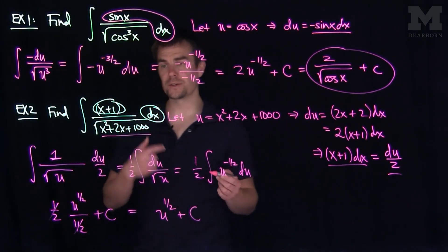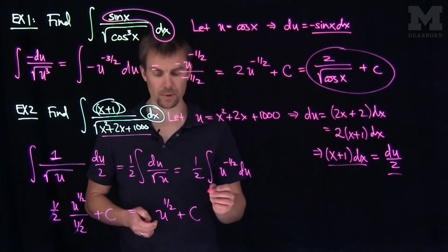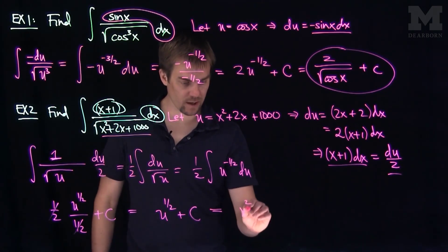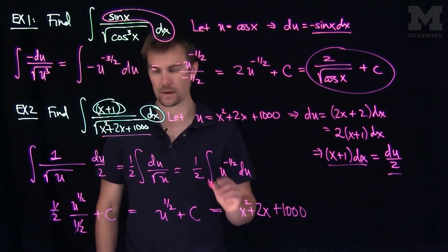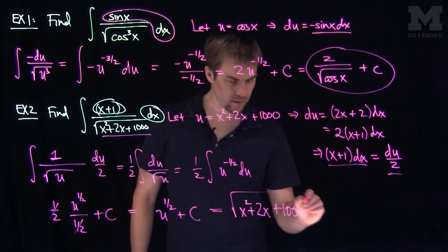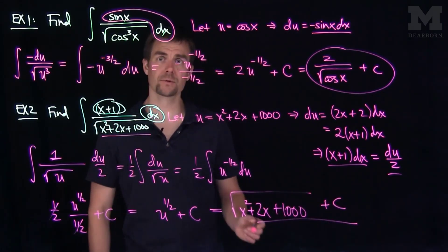And now remember what u is. u is this x squared plus 2x plus 1000. So our final answer is the square root of x squared plus 2x plus 1000 plus a constant c. And that is our solution.